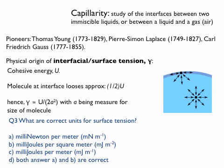Question: what are the correct units for surface tension? Is it millinewtons per meter, millijoules per square meter, millijoules per meter, or both A and B? The correct answer is D — both A and B are correct. Some people answered A, which is right; some answered B, which is also right. Luckily, nobody said C. Well done!